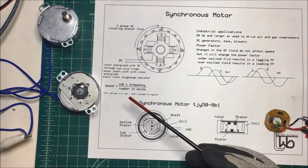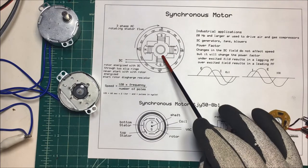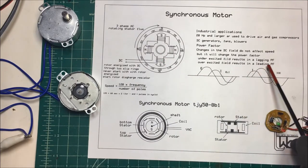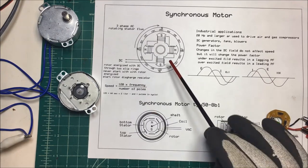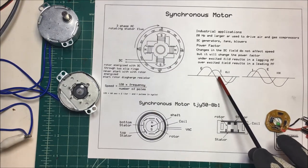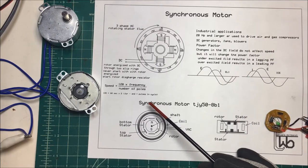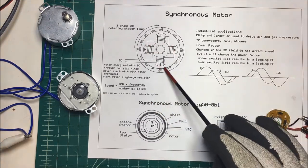If you under excite this field, it results in a lagging power factor. And if you over excite it, you have a leading power factor. So if you have a lot of inductive load in your building, then you can correct the power factor.